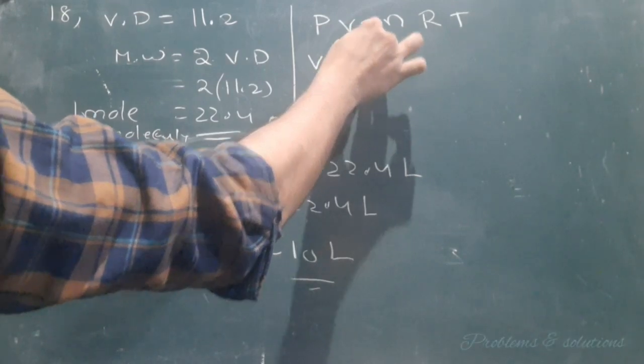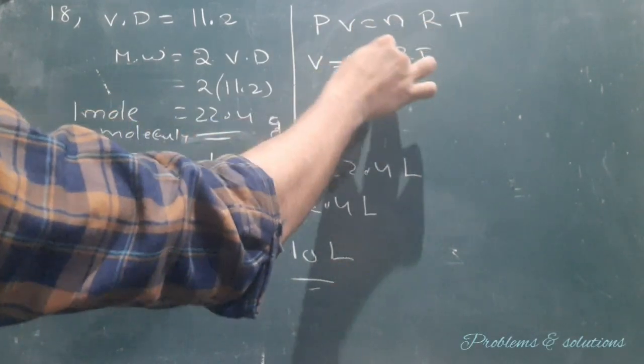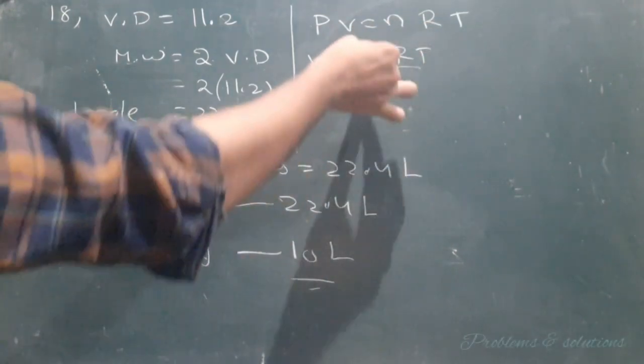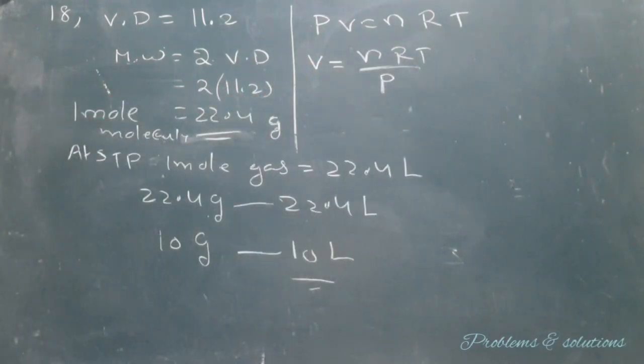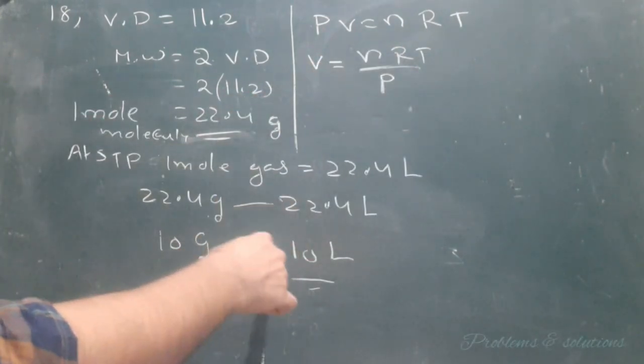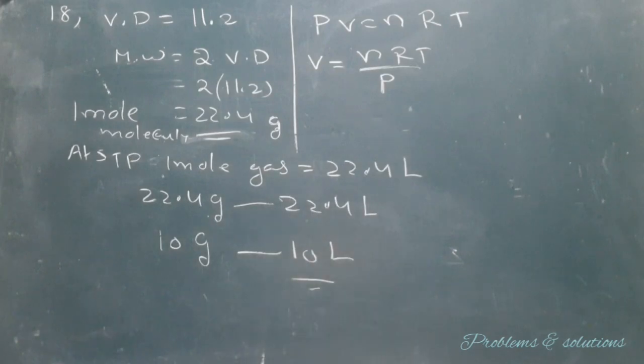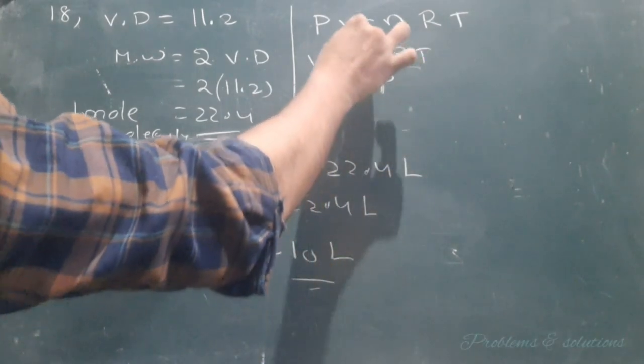So V, volume of the gas, equals nRT by P. Here n is number of moles. We don't know the number of moles of the gas, but we know that number of moles is mass of the gas by molecular weight of the gas.